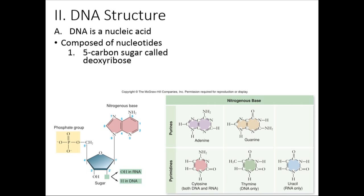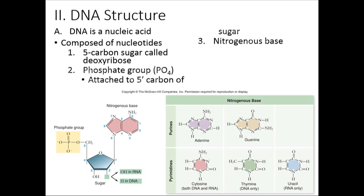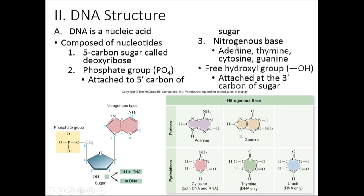So what is DNA? It is a nucleic acid made out of nucleotides. It has a five-carbon sugar called deoxyribose, a phosphate group attached to the five-prime carbon of the sugar, and a nitrogenous base.